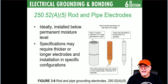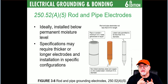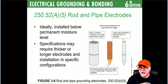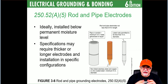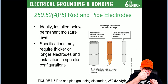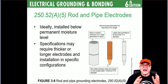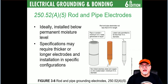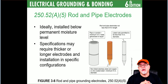Ground rods have to be driven not less than eight feet in the earth. If you hit solid rock, you can switch to a 45-degree angle. If you can't do it at that angle, you're allowed to dig a trench and bury it. You always have to start with an attempt to drive it. Don't place a ground rod in loose backfill and expect it to be acceptable — the code says it has to be driven. As an electrician, I would wait until the backfill is in place and final grade is set, then drive my ground rods.